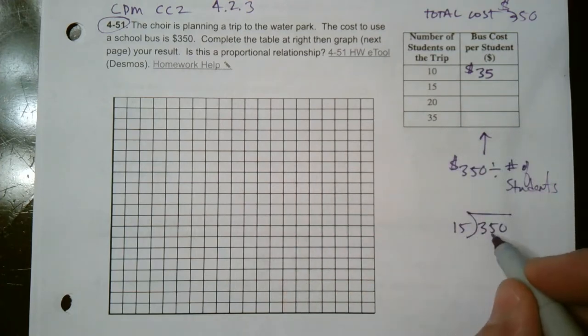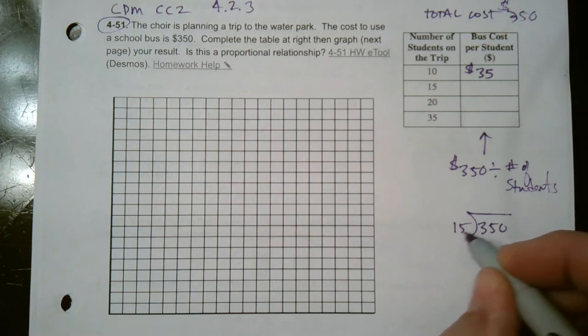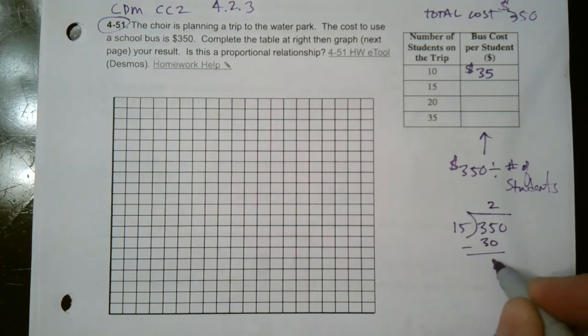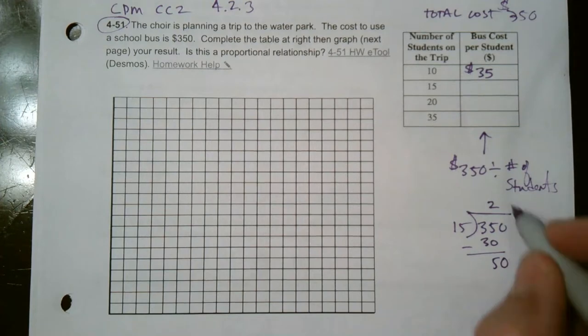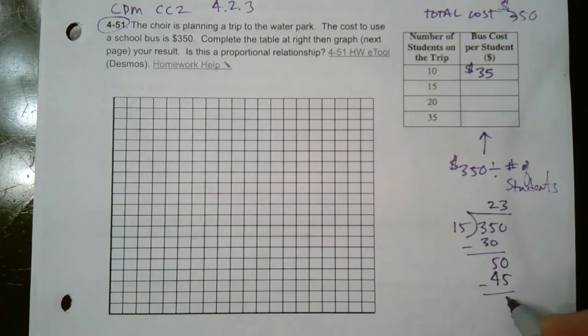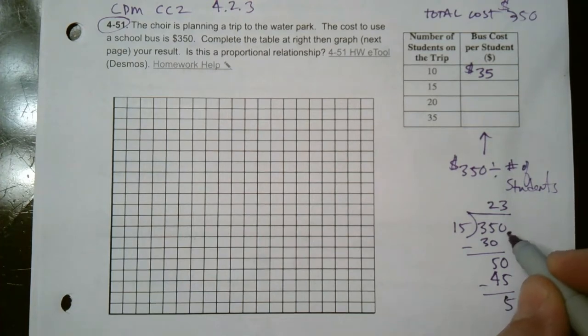So $350 divided by 15. Let's see, 15 goes into $350. It goes in there twice because 2 times 15 is 30. Subtract, you get 5. Bring down the 0. So 15 goes into 50, 3 times, I multiply, I get 45. And then if I subtract again, I get a 5. And if I wanted to keep going, you notice what's going to happen.